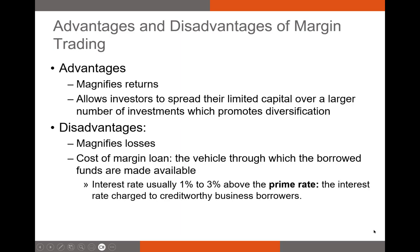There's one main reason why you would want to buy on margin: you want a higher return. Buying on margin amplifies your return because you only owe what you borrow plus some interest to your broker, while any capital gains on your portfolio net of that borrowing are yours. Obviously the big disadvantage is that you've increased the amount you can lose, both because you owe money to your broker and because you're paying interest on the loan.